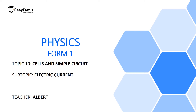Welcome to ECLIMU Learning Simplified and welcome to this lesson. In the previous topic we discussed electrostatics, and we said electrostatics is the study of static charges. We also talked about two types of charges: positive charges which we call protons, and negative charges which we call electrons when they are found in an atom.